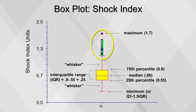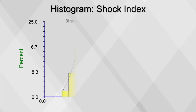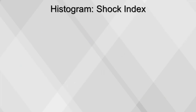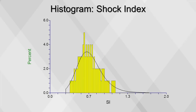We can look at the same shock index data with a histogram. The dots in the box plot showed us that there were several large values greater than 1.5 times the interquartile range. The same is represented in this histogram with the right skew. There's no single rule of thumb for choosing bin sizes; the bin sizes you choose will depend on the research question you're asking.